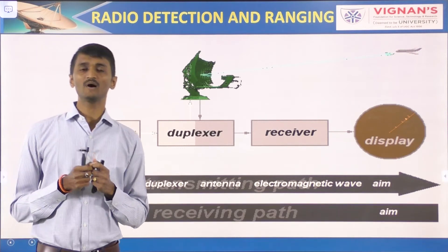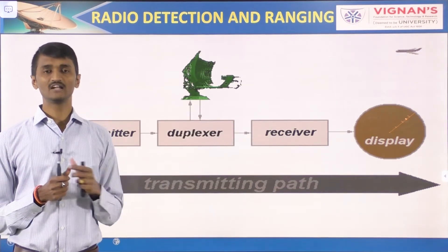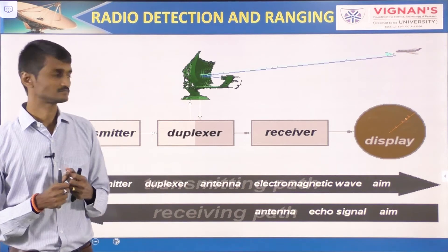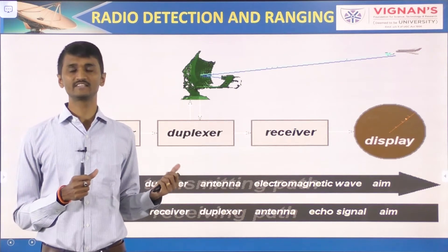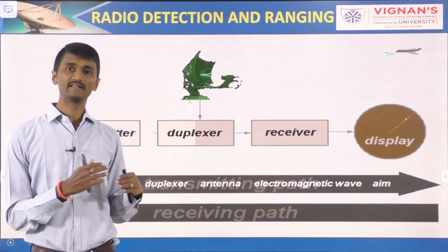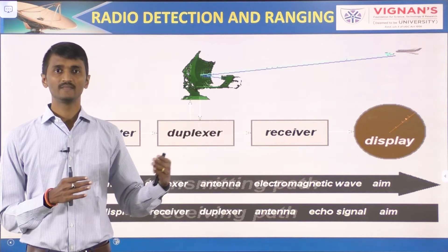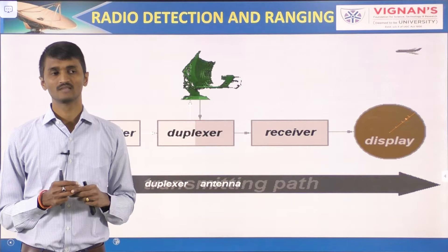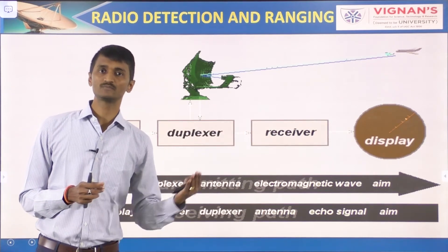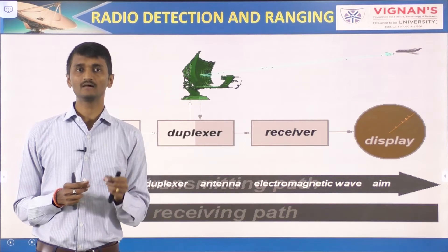An elementary form of radar consists of a transmitting antenna emitting electromagnetic radiation generated by an oscillator, a receiving antenna, and an energy-detecting device or receiver. A portion of the transmitted signal is intercepted by a reflecting object — the target — and is reradiated back in all directions. The energy reradiated in the back direction is of prime interest to the radar. The receiving antenna collects the return energy and delivers it to a receiver where it is processed to detect the presence of the target and to extract its location and relative velocity.